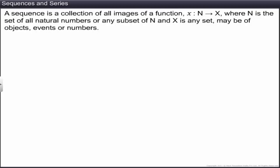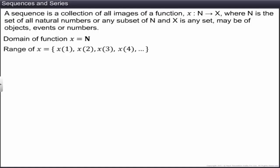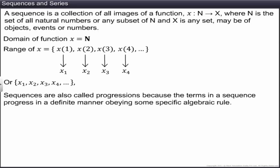A sequence is a collection of all images of a function from N, or any subset of N, to a set X, where N is the set of all natural numbers. The domain of the function is the set of natural numbers. The image of 1 under the function is denoted x₁, of 2 is x₂, and so on, with subscripts denoting position. Sequences are also called progressions because the terms progress in a definite manner obeying some specific algebraic rule.